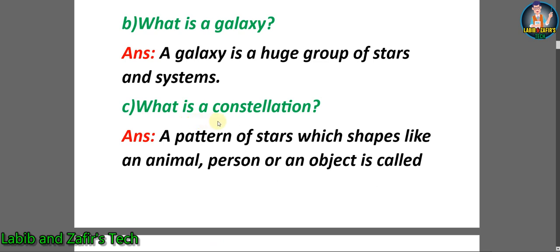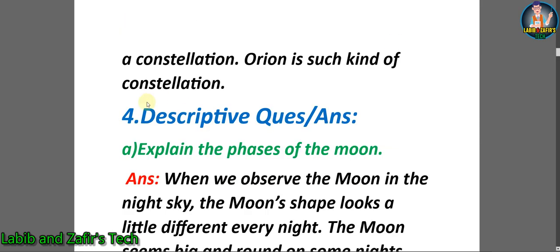C. What is a constellation? Answer: A pattern of stars which shapes like an animal, person or an object is called a constellation. Orion is such kind of constellation.